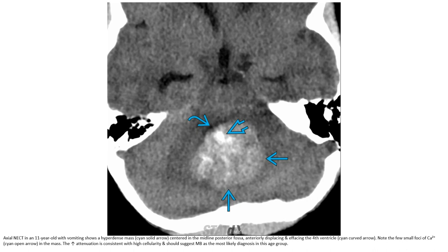Non-contrast CT in an 11-year-old with vomiting shows a hyperdense mass centered in the midline posterior fossa, filling and expanding the fourth ventricle. Small foci of calcification are seen in the mass. The increased attenuation is consistent with high cellularity and should suggest medulloblastoma as the most likely diagnosis at this age.